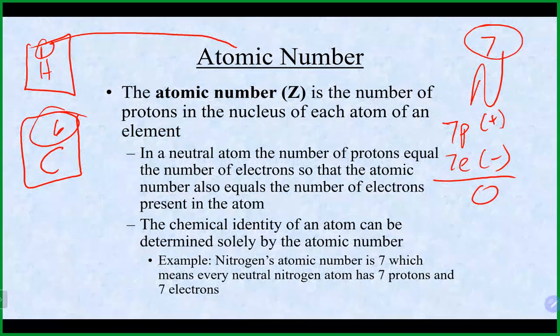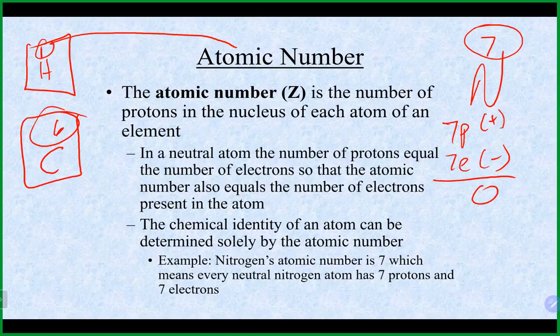Those rows are placed at the bottom for logical reasons — it would make the periodic table too wide. They took those rows down because those elements do share similar properties. A lot of elements on the bottom actinide row are radioactive, and many are man-made elements.